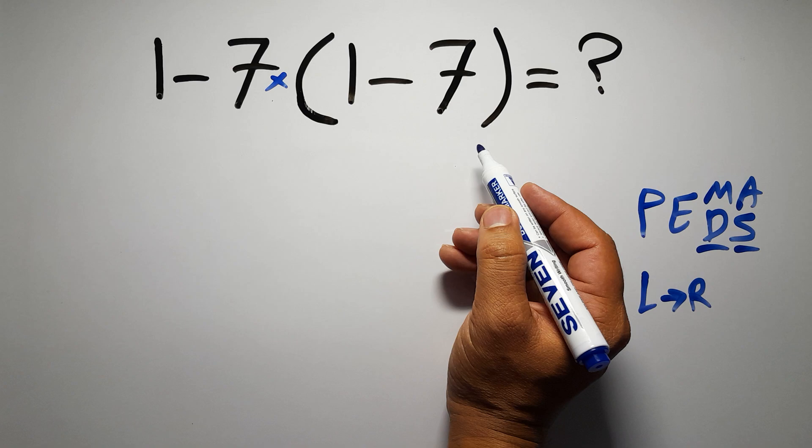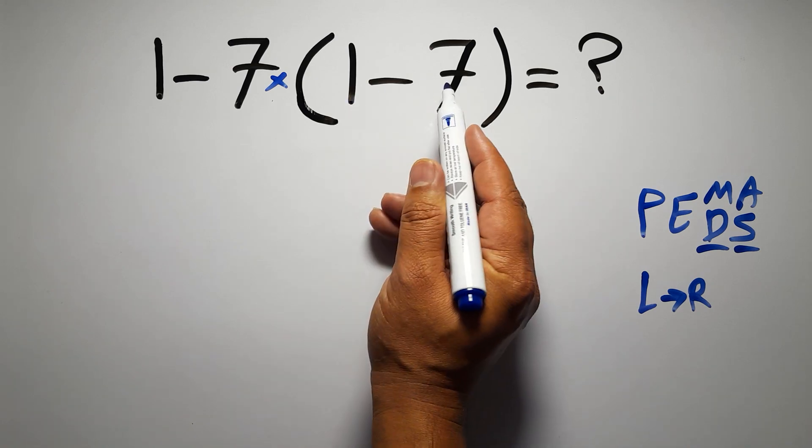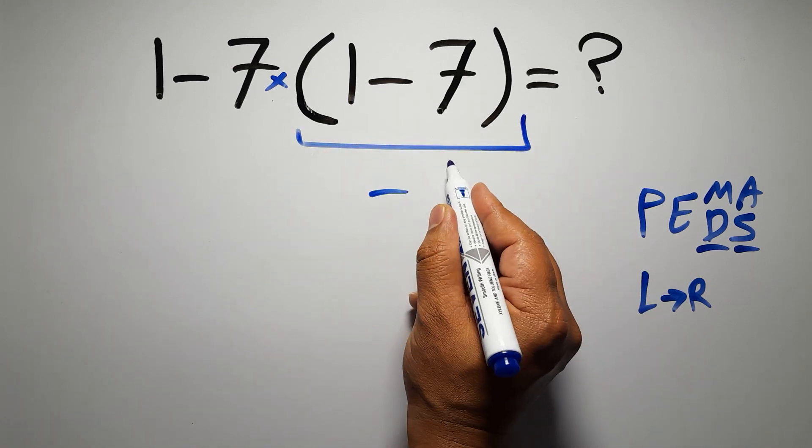So first this parentheses, inside this parentheses we have 1 minus 7 which gives us negative 6.